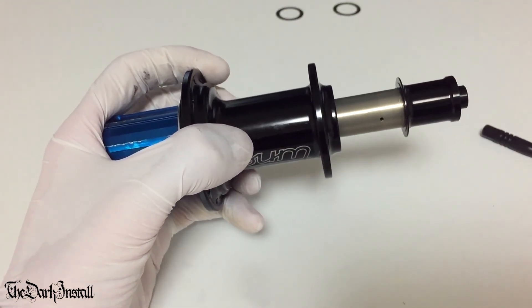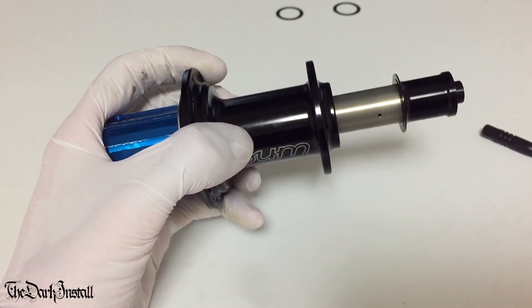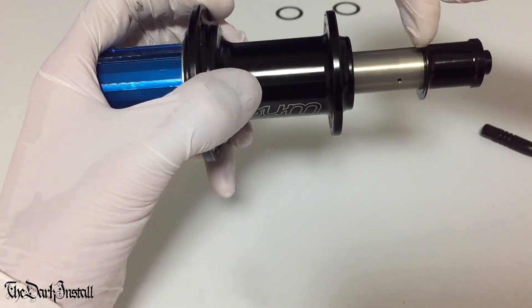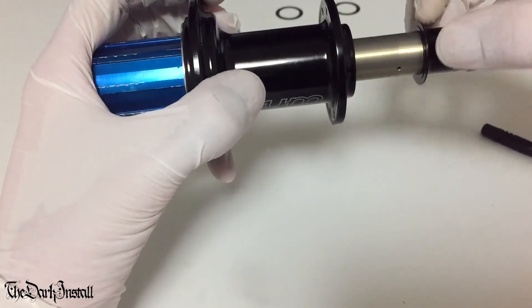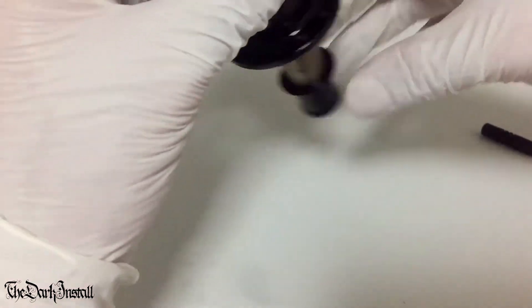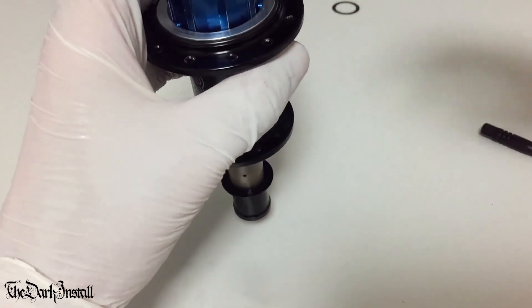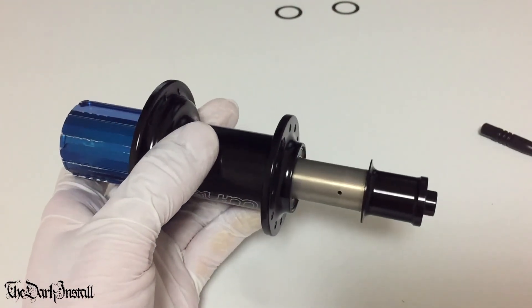The next step then, which you can figure out yourself I'm sure, is you are going to knock this all the way in until this race, this end cap, is sat right up against this bearing. The axle will come through this here and sit out the end. I'm going to do this off camera. I'll show you when I'm finished.